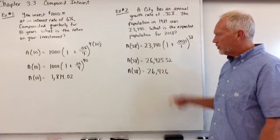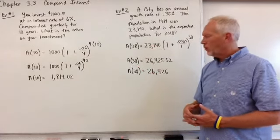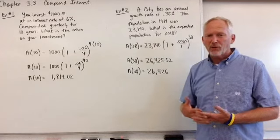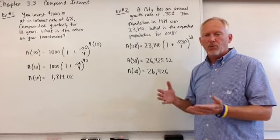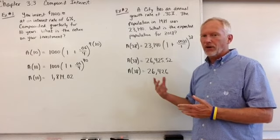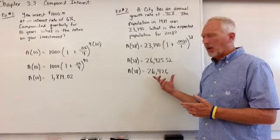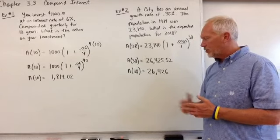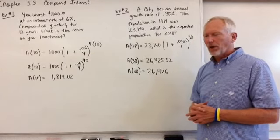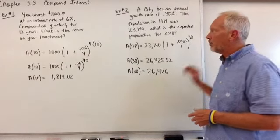So a of 38, we plug this in your calculator, we get twenty six thousand four twenty five point five two. Well, people don't... We have to round up to the nearest whole number to represent a population of people. So a of 38 would actually be twenty six thousand four hundred and twenty six people.